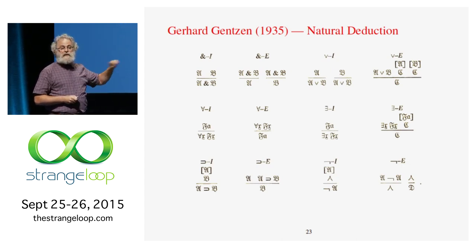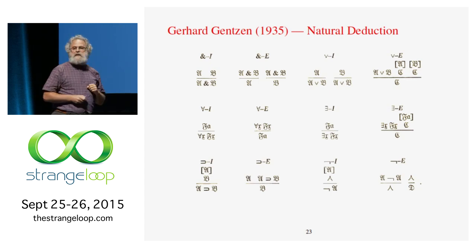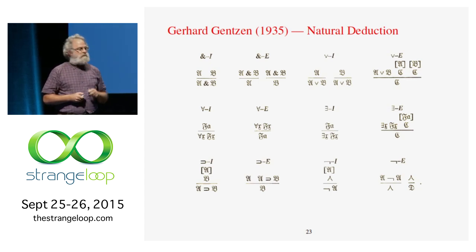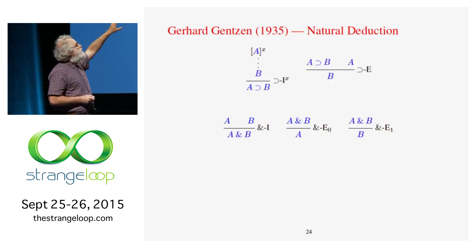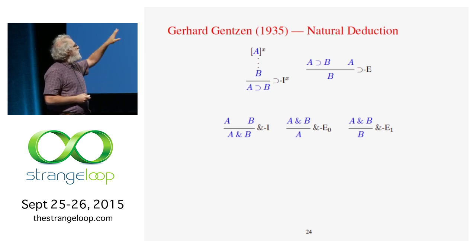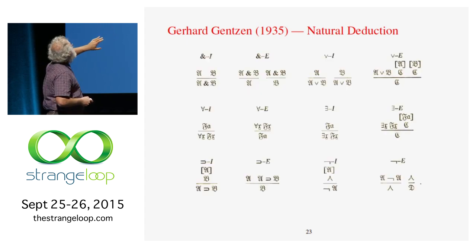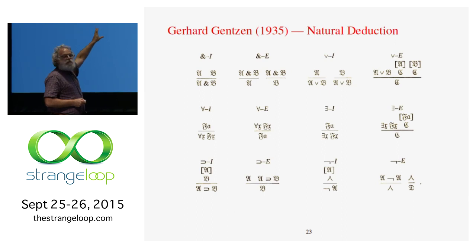We're going to focus on the fraction having to do with implication and conjunction. Implication is that funny backward C — it really is a backward C, it's "consequence" backwards. The rules come in pairs — this is the important thing. On the left, we have rules with I, meaning introduction rules, and you have the connective — implication or ampersand — below the line. The rules on the right are called elimination rules, and there you have a connective above the line.